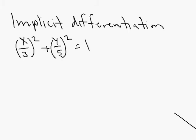We're going to talk about implicit differentiation. We have this function here: (x/3)² + (y/5)² = 1. In order to understand what implicit differentiation is, let's look at a very basic differentiation problem that we've done lots of times.